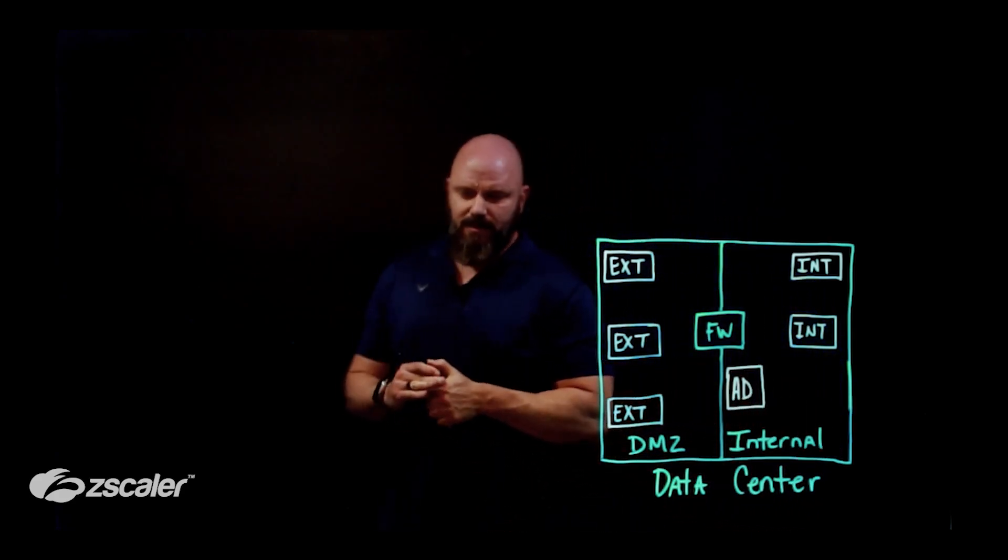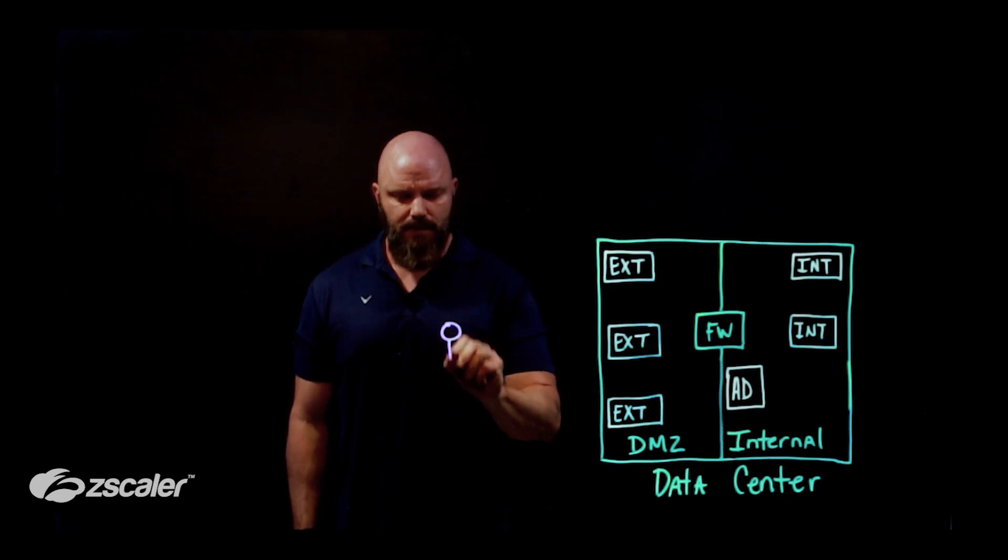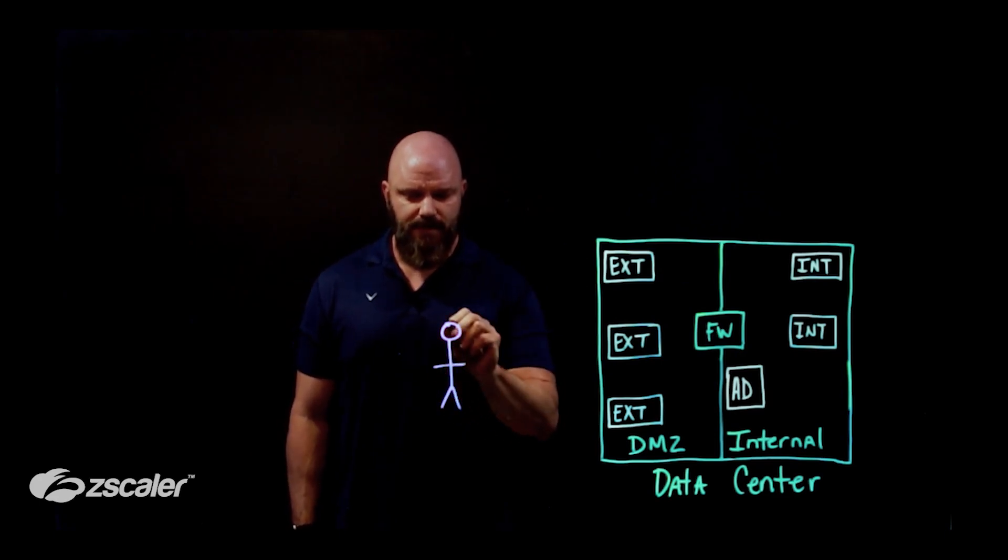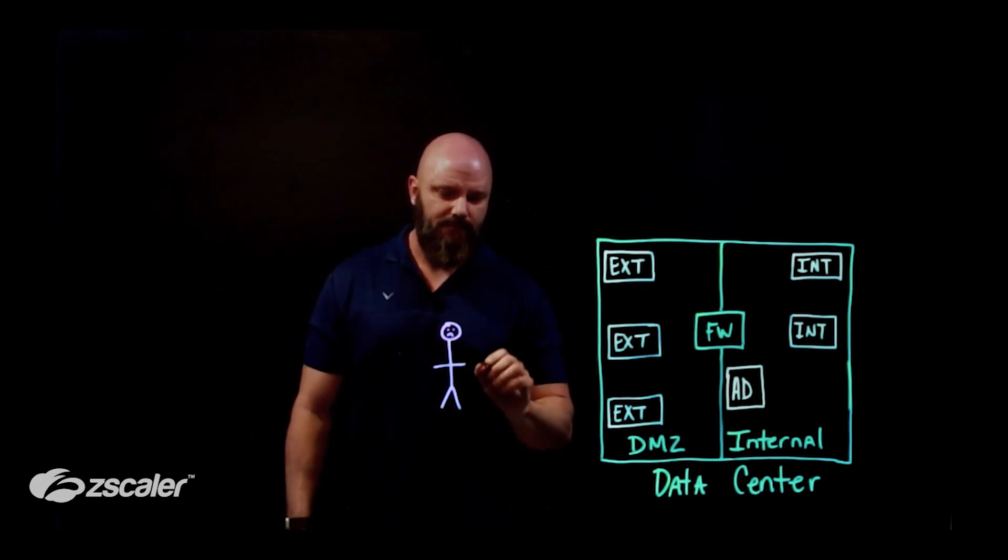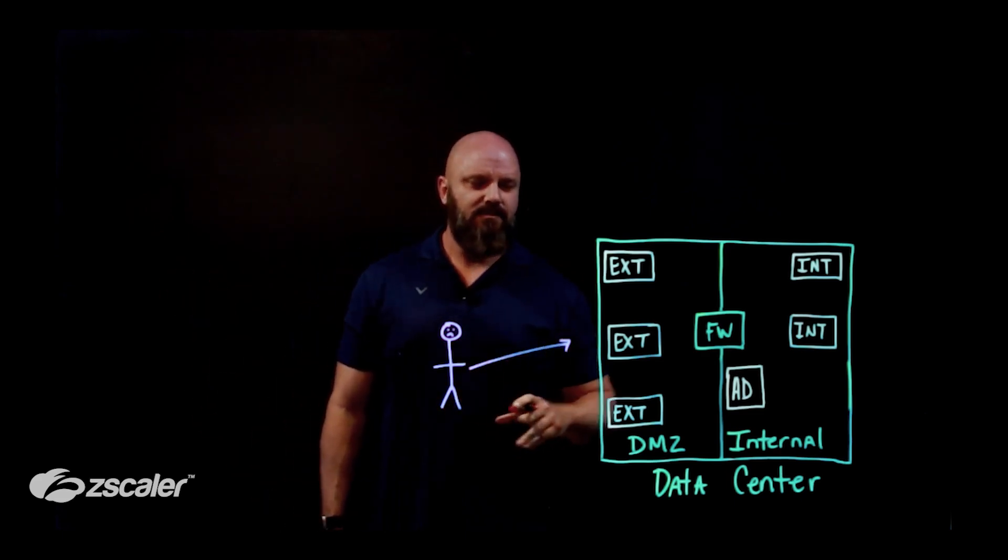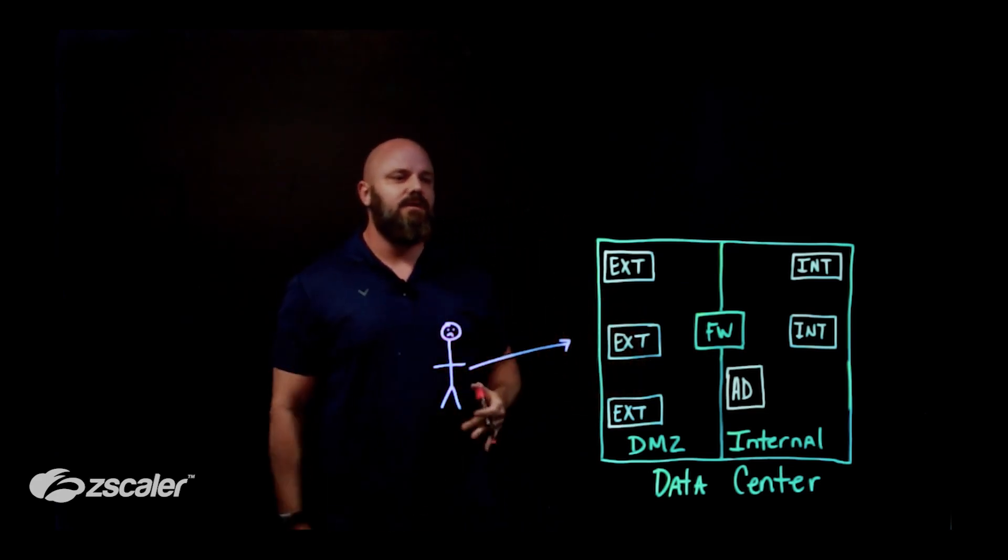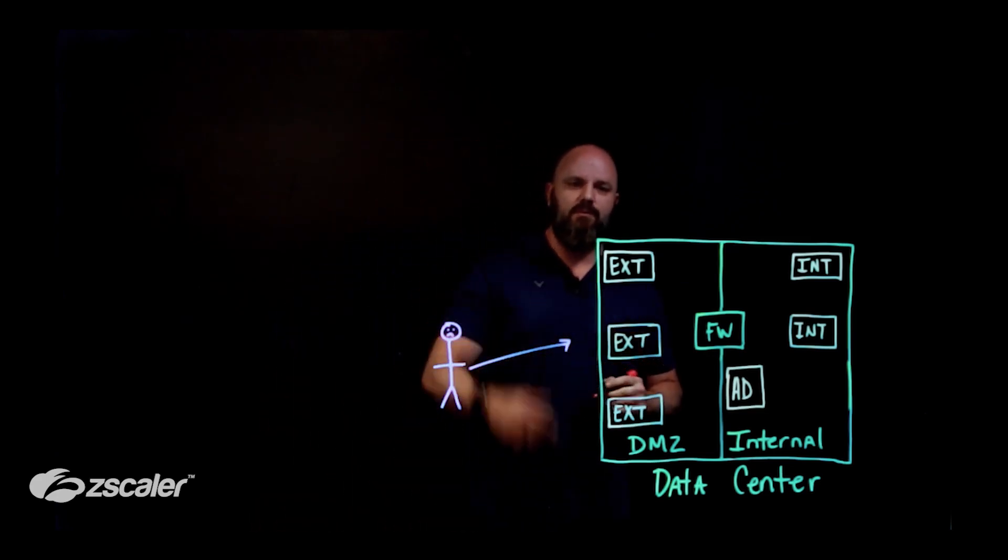So let's look at it from the lens of that threat actor. Come over here. Little stick figure. They're always grumpy for some reason. They got a chip on their shoulder. But the bottom line is they're looking, they're going to hit your external attack surface here and look for a way in.